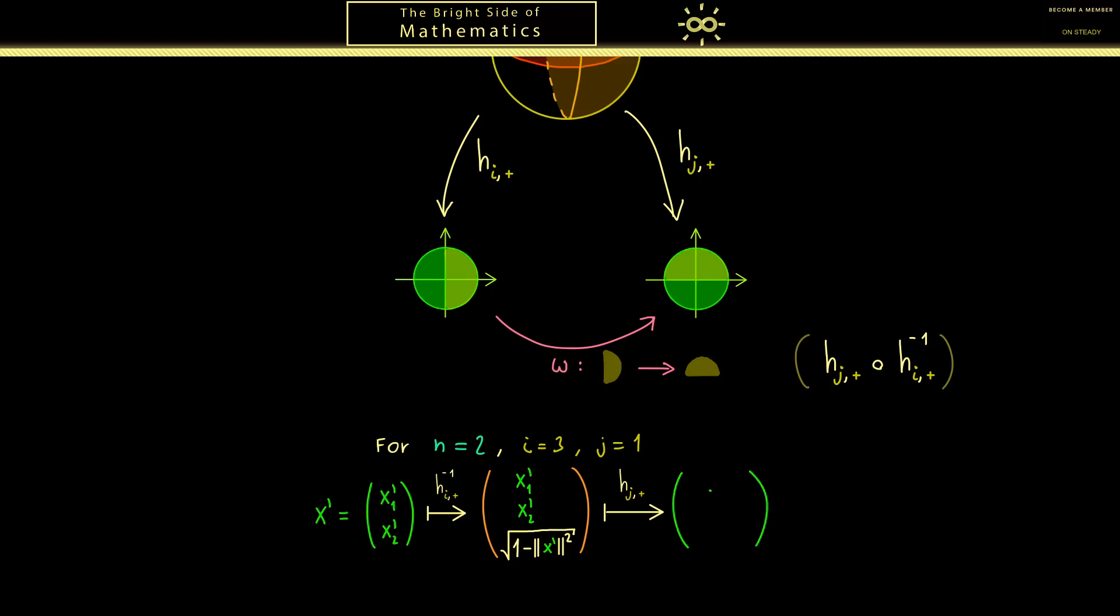Now the first component here is x_2' and the other one is the square root here. There you should see going from this vector here on the left-hand side to the vector here on the right-hand side is exactly the action of our map omega.